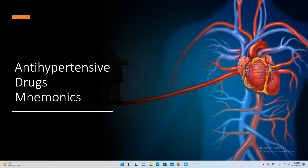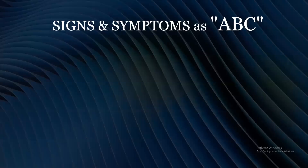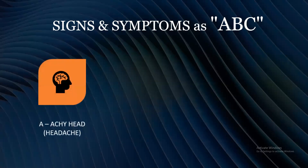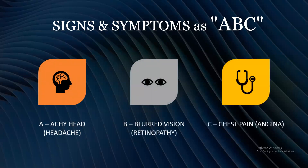Welcome to the topic: antihypertensive drug mnemonics. Hypertension — hyper means high BP, high tension on the heart. Signs and symptoms of hypertension can be remembered as A, B, and C: A is an achy headache, B is for blurred vision and retinopathy, and C is for chest pain, also called angina.